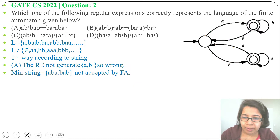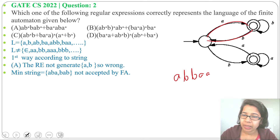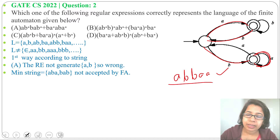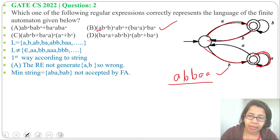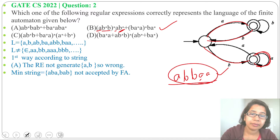Next option B: let me take a string like A, B, B, A, A and check whether this can be accepted by this NFA or not. Tracing: A, first B, second B, first A, second A — it is accepting. Now check whether this string can be generated from this regular expression: A, B, B, one A — after one A we cannot generate a second A. Since we cannot generate the second A, this string cannot be generated from this expression, but it can be accepted by this NFA.